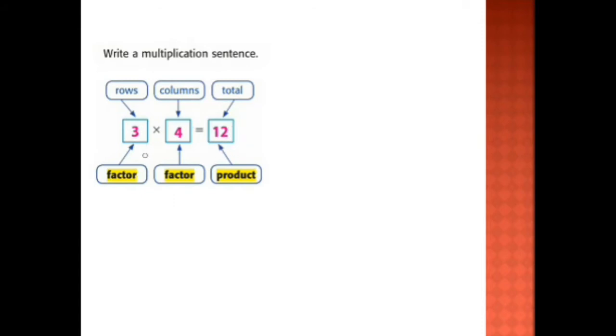The factor — we have two factors multiplied together to get the product. So three and four are called factors. When we multiply two numbers together, these two numbers are called factors, and the answer of the multiplication is called the product. So the total cost was twelve dollars.